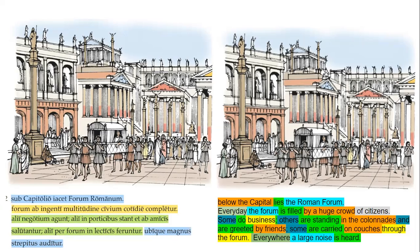And are greeted by — put in brackets — their friends. 'Ab amicis' is another ablative of agent, and 'salutantur' is obviously a passive verb. Still others — 'alii' — 'per forum in lecticis feruntur.' Others are carried through the forum — 'per forum' being accusative of extent — in lecticis, in sort of raised, carried lounges or couches. 'Feruntur' — are carried. So others are carried through the forum in raised couches.